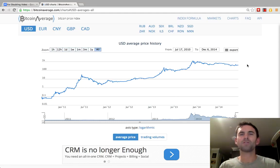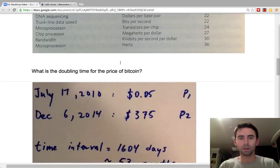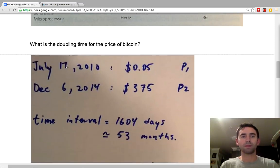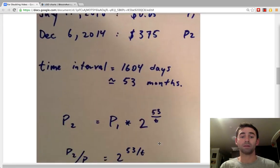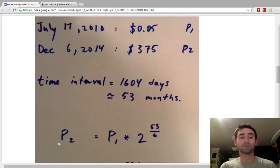Just for fun, let's do some math. Well, I'll do some math, you just watch. Let's find out what the doubling time of Bitcoin is. The price when it started trading was 5 cents. Today it's $375. So at a time interval of 53 months approximately, the formula for doubling is P2 equals P1 times 2 to the power of total time divided by doubling time.